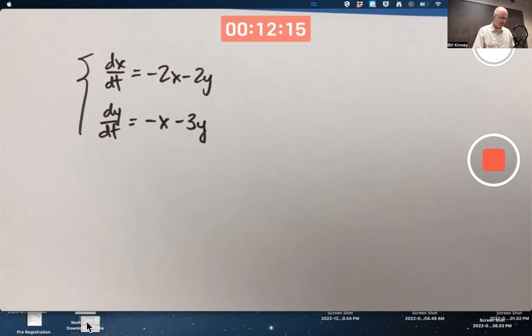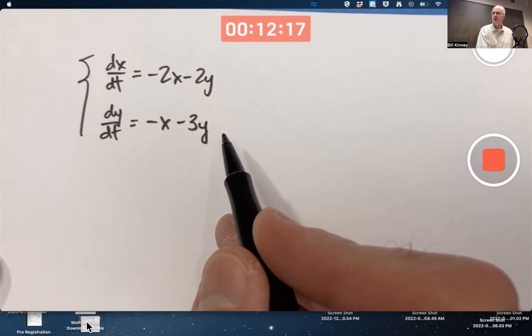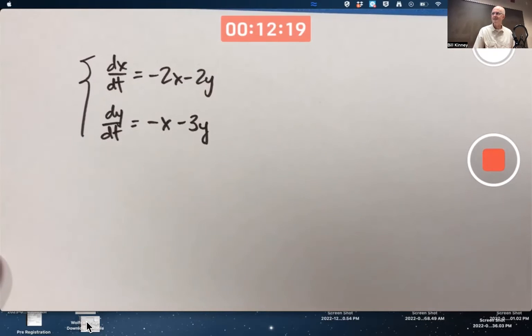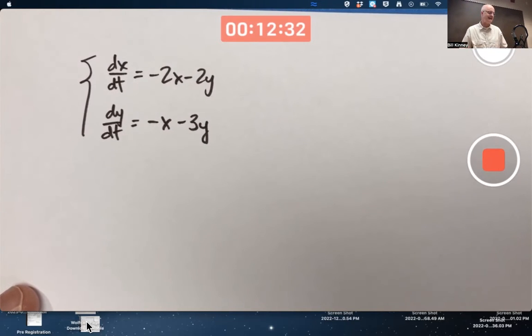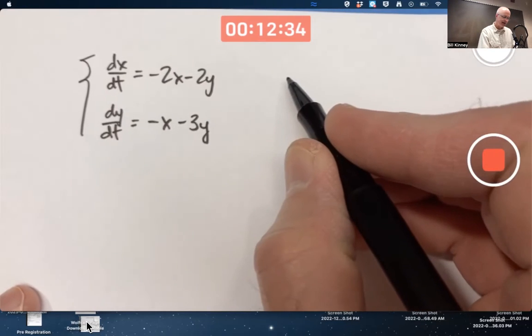So here we have a system of two linear differential equations, nothing to do with the harmonic oscillator. I'm not specifying any application. All we're after is seeing what the phase plane looks like and using null clines to help us. In chapter three, we're also going to learn about eigenvalues and eigenvectors, but we're not quite there yet. So we just focus on the null clines.